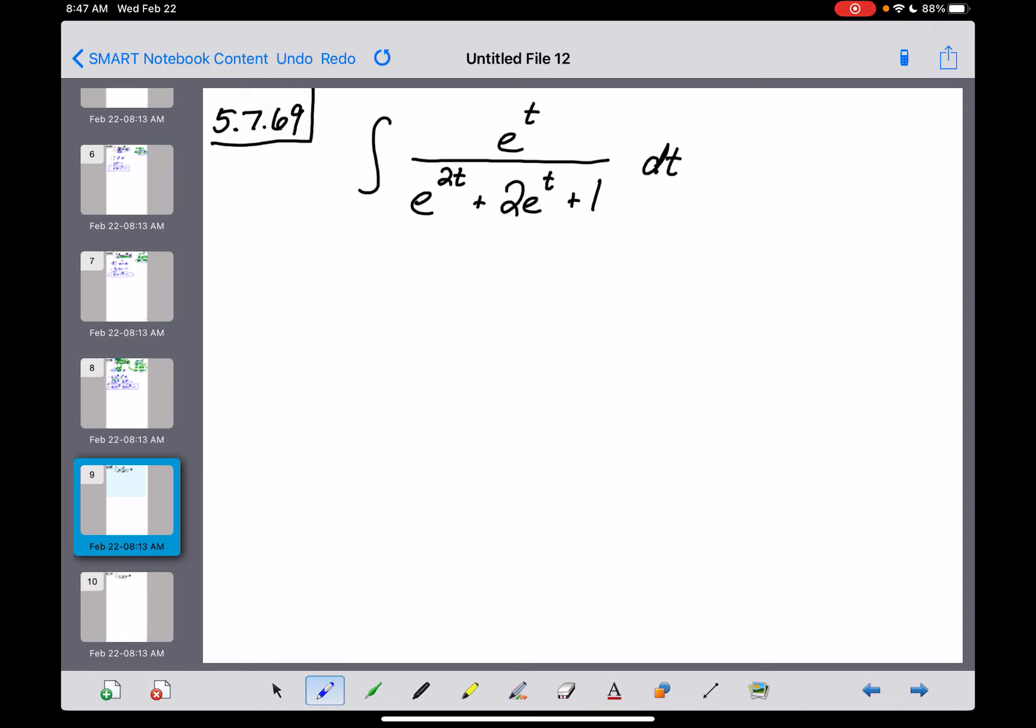All right, number 69 is a tough problem right here, but I think I know where we're going with this one. So we've got a monomial e to the t up in the numerator, and then a trinomial e to the 2t plus 2e to the t plus 1 down in the denominator.